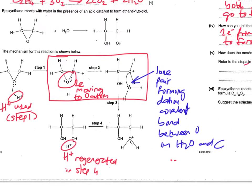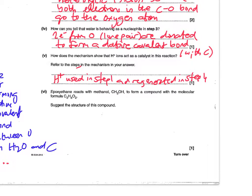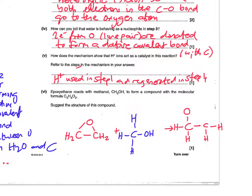We can go back to the question and fill that in to get that mark. The final part says epoxy ethane reacts with methanol to form a compound with a molecular formula C₃H₈O₂, and asks us to suggest the structure. Drawing out epoxy ethane and methanol in two different colours, the part from epoxy ethane is left in red. The H from the methanol — that is, the H on the OH group — goes onto one oxygen that's already there, and then the remaining carbon on the right-hand side picks up the remainder of the methanol molecule.